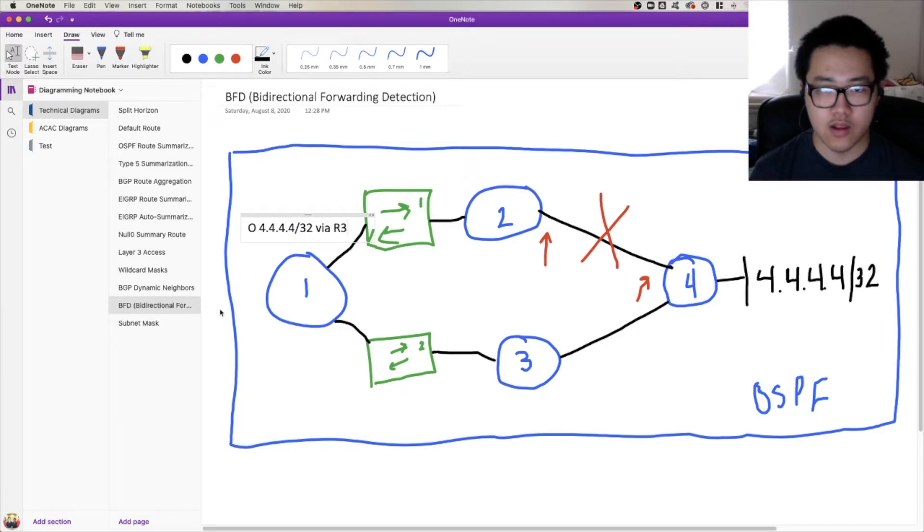And then that way, you're not blackholing traffic. Any traffic coming into R1 that wants to go to 4444-32 will take the new path, and all is dandy, right? This broken path hasn't really impacted any substantial amount of reachability, right? So that's if that link fails.